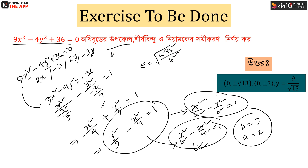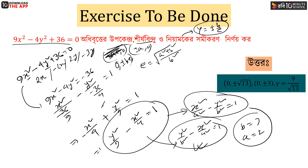Now, the foci are at plus or minus (ae, 0) and the vertices are at plus or minus (a, 0). The directrix is y equals plus or minus b/e. That gives us parameters at (0, ±be), so that is how we check the math.